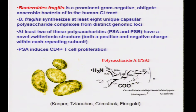The approach we've taken is to use model organisms that we can genetically manipulate, associate into mice, look at outcomes, and really get the molecular relationship between the bug and the host. One of the organisms we work with is Bacteroides fragilis, an organism that's been studied for many years, initially by people like Sidney Feingold who studied many of these anaerobes. Bacteroides is the most common genus in most humans in the gastrointestinal tract.